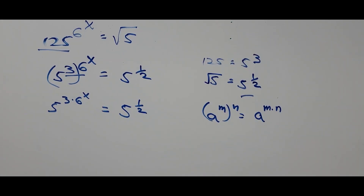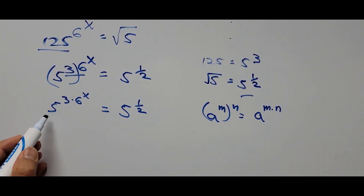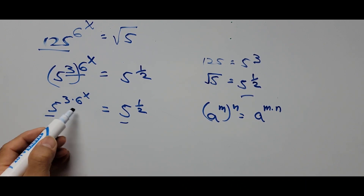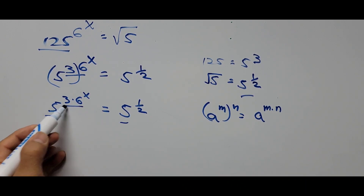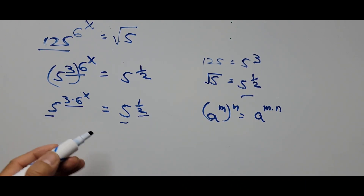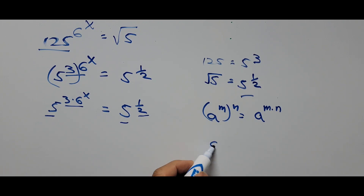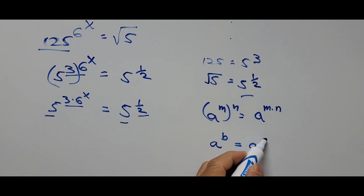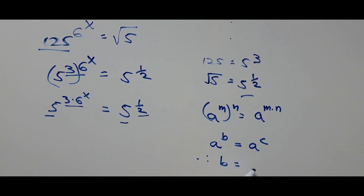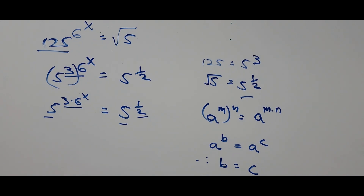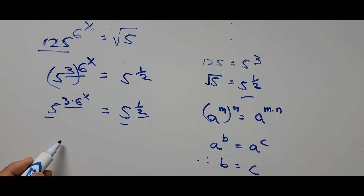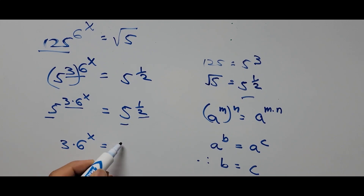Now we have achieved our goal — we have a common base. Since they have the same base, we equate the exponents. According to the formula, if a to the b equals a to the c, then b equals c. So the equation now becomes 3 times 6 to the power of x equals 1/2.